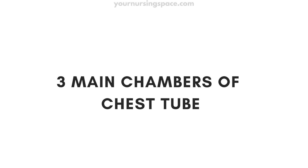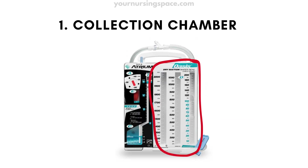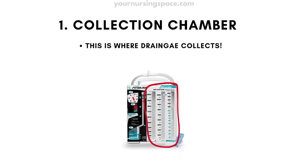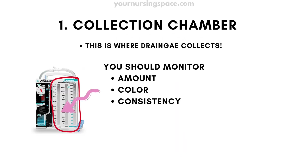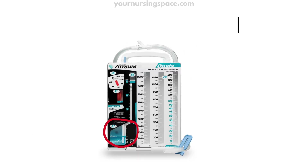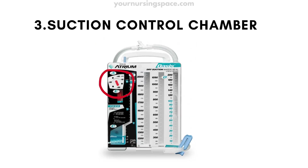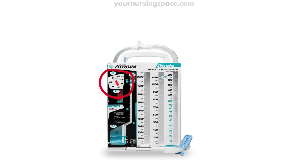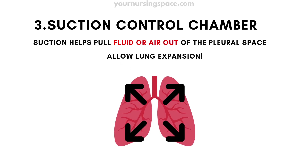Let's break down the three main chambers of a chest tube drainage system. The collection chamber is where drainage collects — nurses should monitor the amount, color, and consistency. The water seal chamber acts as a one-way valve, preventing air from flowing back into the pleural space. The suction control chamber, if suction is ordered, helps pull air or fluid out of the pleural space to allow lung expansion.